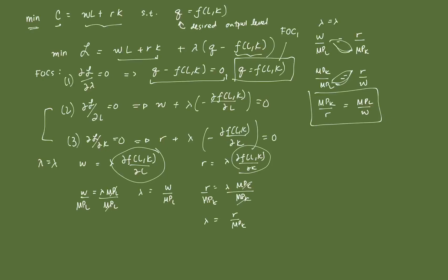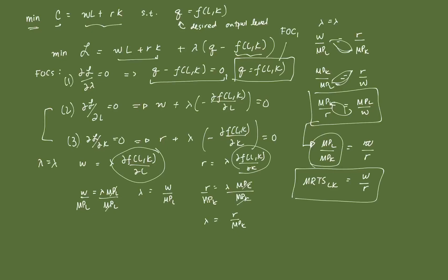Further rearranging, we get MPL over MPK equal to W over R. We know from earlier production theory that MPL over MPK is the marginal rate of technical substitution for labor and capital. So these two conditions are equivalent: the cost-minimizing firm should equate the MRTS between the two inputs to the ratio of their input prices — the wage rate and the rental rate of capital.